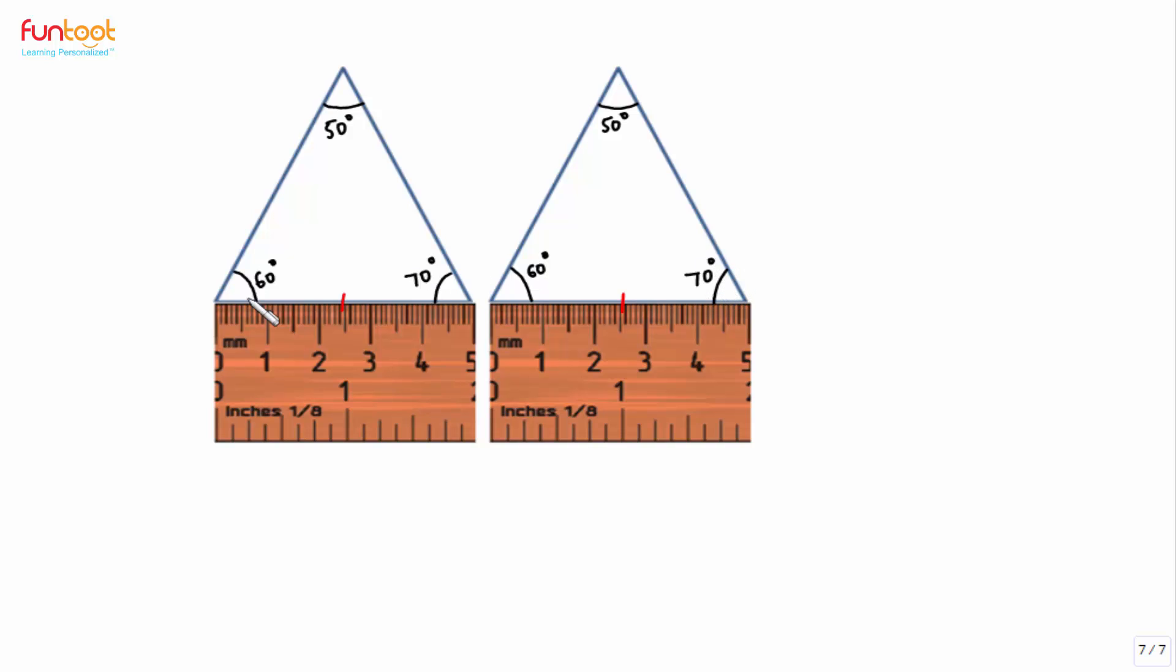And this angle is 70 degrees and this angle is also 70 degrees. So 60 degrees and 70 degrees become the two angles and this side and this side becomes the included side between the angles.